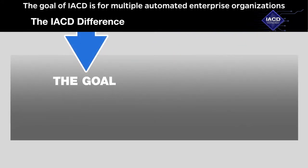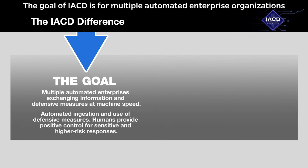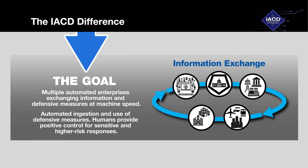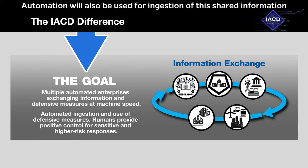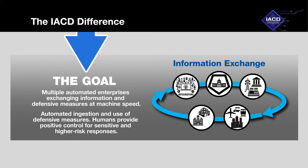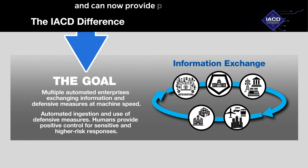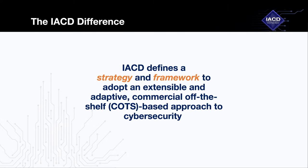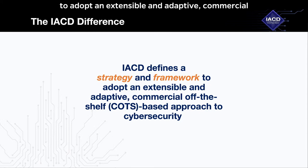The goal of IACD is for multiple automated enterprise organizations to exchange information and defensive measures at machine speed. Automation will also be used for ingestion of the shared information and defensive measures. Humans are therefore freed from repetitive tasks and can now provide positive control for sensitive and higher risk responses. IACD aims to achieve this by defining a strategy and framework for organizations to adopt an extensible and adaptive, commercial off-the-shelf based approach to cybersecurity.